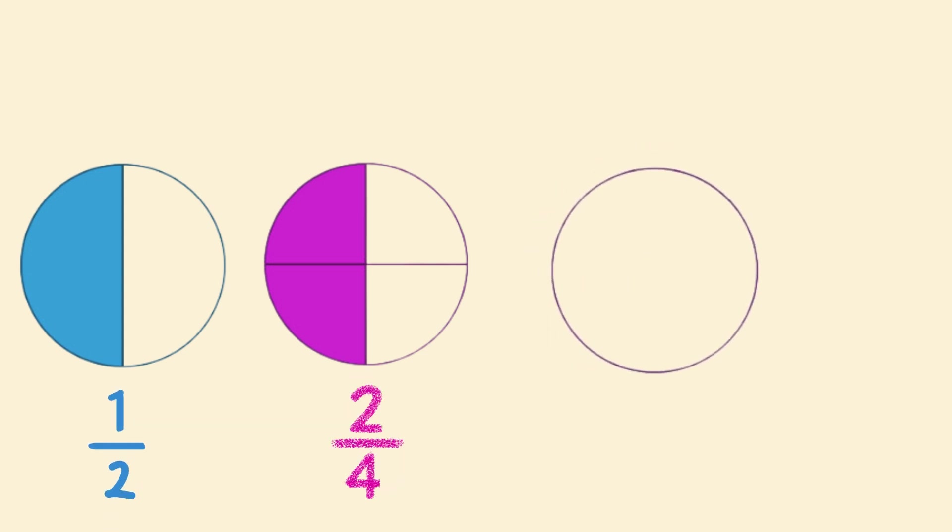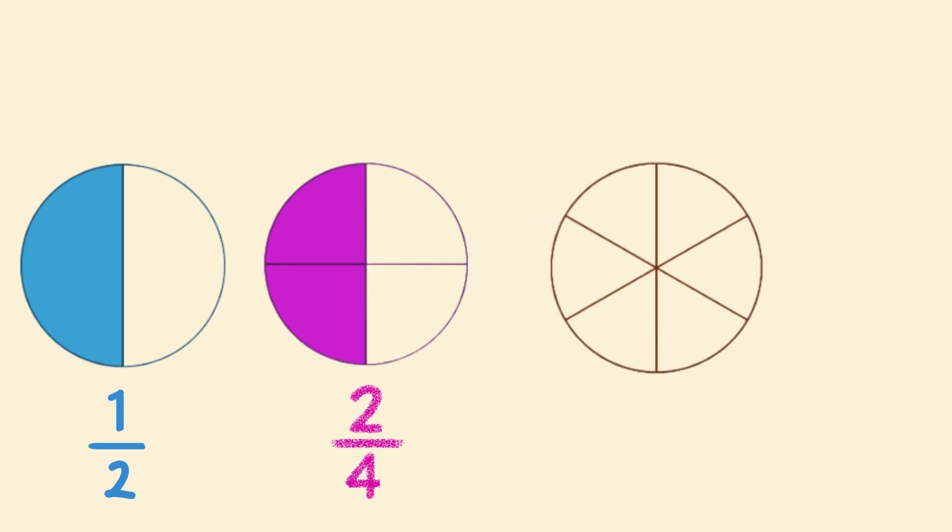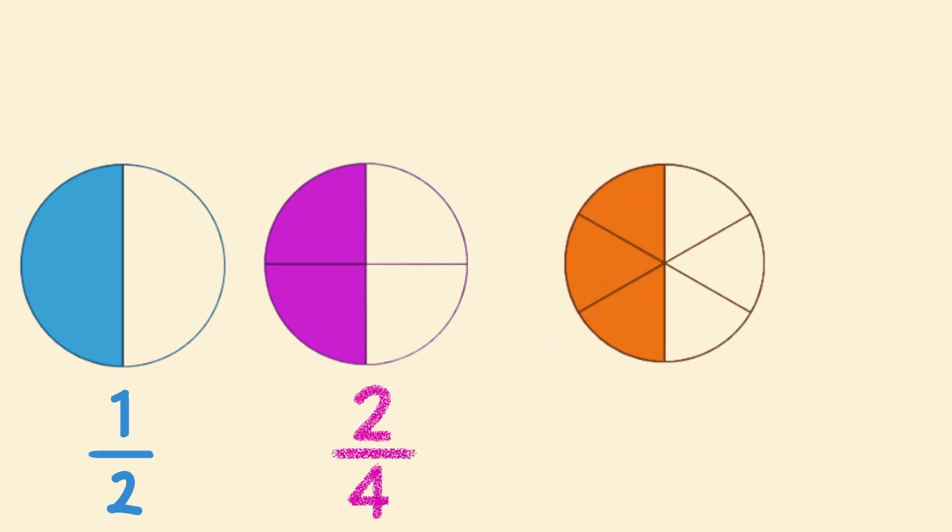Let's try to find another fraction that is equivalent to these two. Let's cut the same circle into six equal parts. This means the denominator will now be six since there are six equal parts. How many parts do we need to shade to make it the same amount as one-half or two-quarters? We will need to shade three parts out of the six. This means that the fraction three-sixths, two-quarters, and one-half are all equivalent fractions.